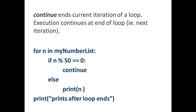So in the same example, but replacing that with a continue statement, the execution after, when it reaches a number that is divisible by 50, it's going to jump to after this print in statement, which means that it's going to grab the next number on my number list and continue iterating through the list.